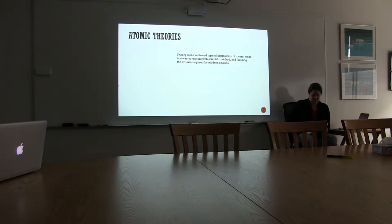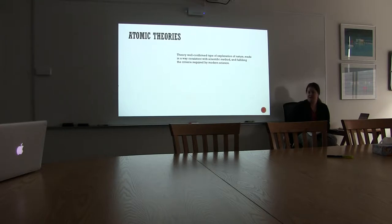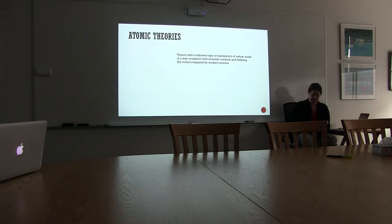Current models or representations of the atom are theories. Do you guys know what a theory is? It's part of the scientific method — we always have to make an observation, then we have a hypothesis, and then we do experiments. A theory comes from all of those experiments. So it's a well-confirmed type of explanation, where a lot of experiments are done and it works in many different ways.